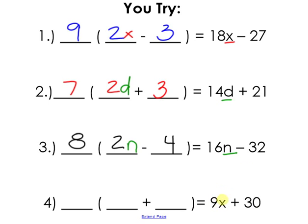Our last example, we are going to hide the variable. What's the GCF of 9 and 30? It is 3. 3 goes into 9 three times. 3 goes into 30, 10 times. I'm going to un-erase the variable. It was an x. It was with the first number, and so I'm going to put it back with the first number.